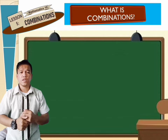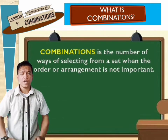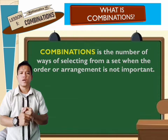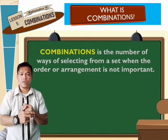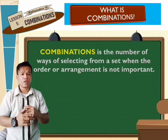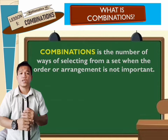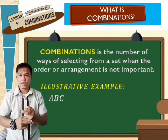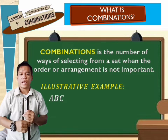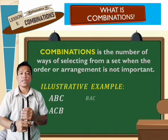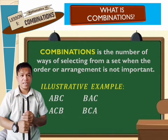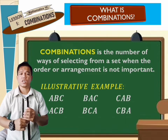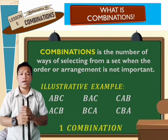What is combinations? By definition, combinations is the number of ways of selecting from a set when the order or arrangement is not important. For example, A-B-C, A-C-B, B-A-C, B-C-A, C-A-B, and C-B-A are all just one combination.